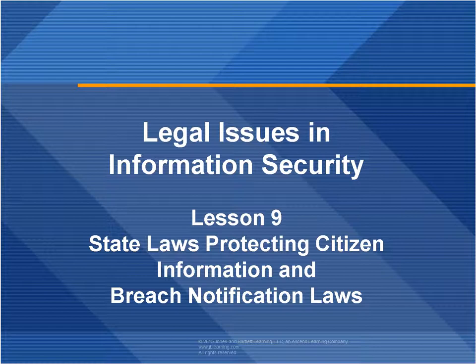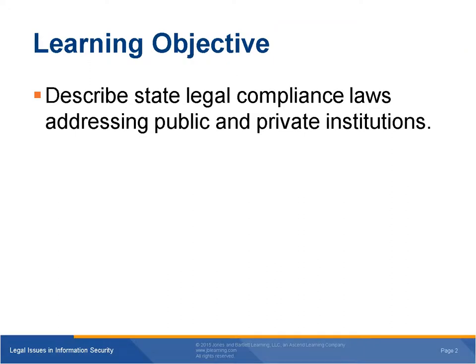As you encounter issues regarding the law, security, and privacy, you must consider the impact of state laws and rules. The learning objective for this chapter describes state legal compliance laws addressing public and private institutions. The topics we'll cover include the history of state actions to protect personal information, what breach notification laws are, and what state data-specific security and privacy regulations are.